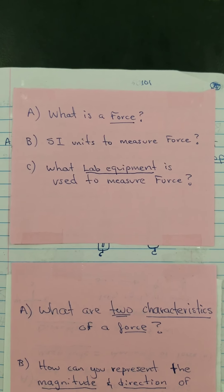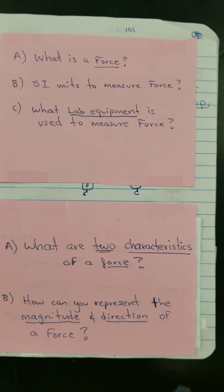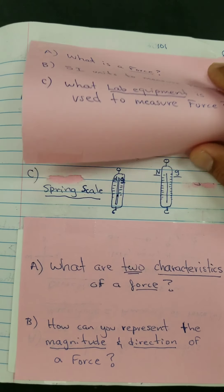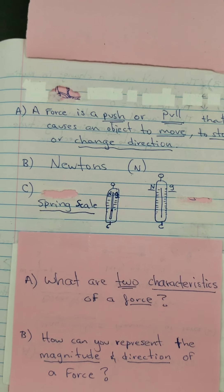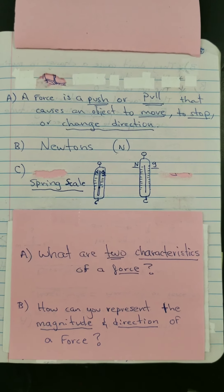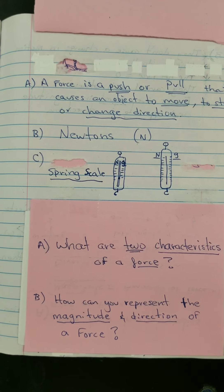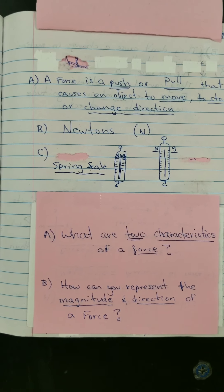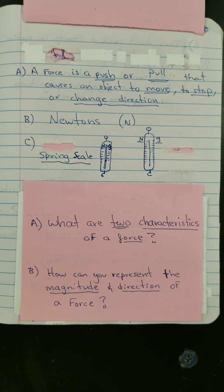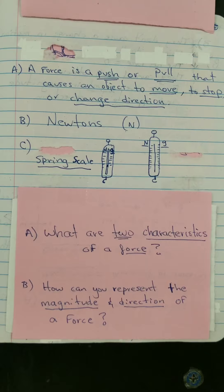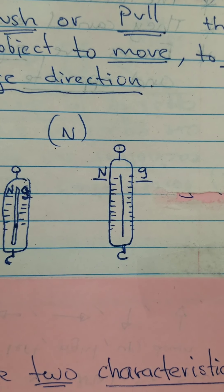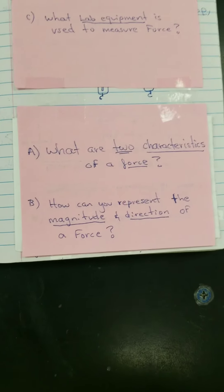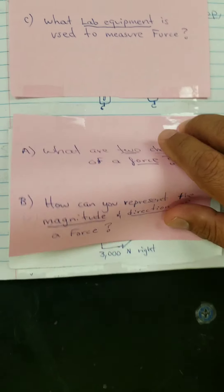What are the SI units to measure force? The SI units are the international standards, like the metric system. What lab equipment is used to measure force? Letter A: a force is a push or a pull that causes an object to move, to stop, or to change direction. Letter B: the SI unit to measure force is Newtons. Letter C: the equipment used to measure force is called the spring scale — and that is what the spring scale looks like.